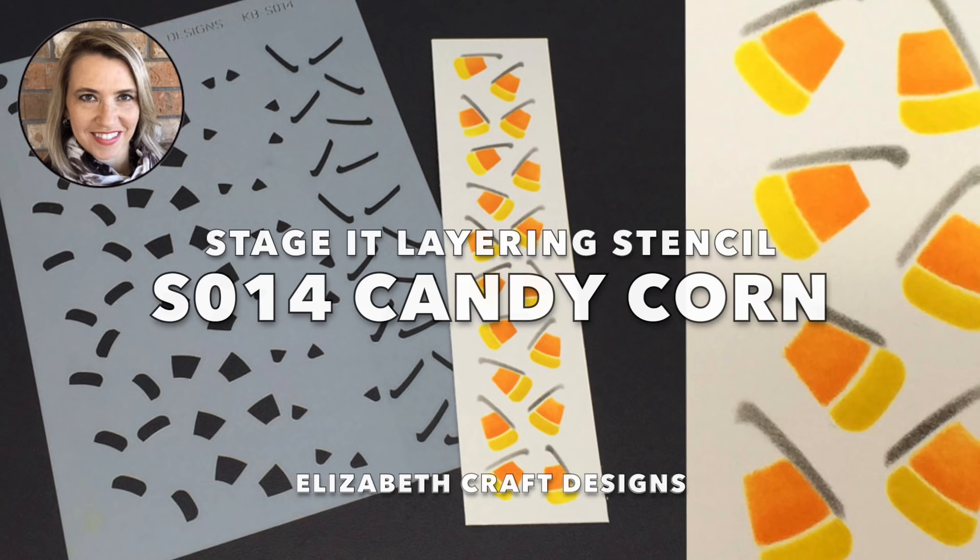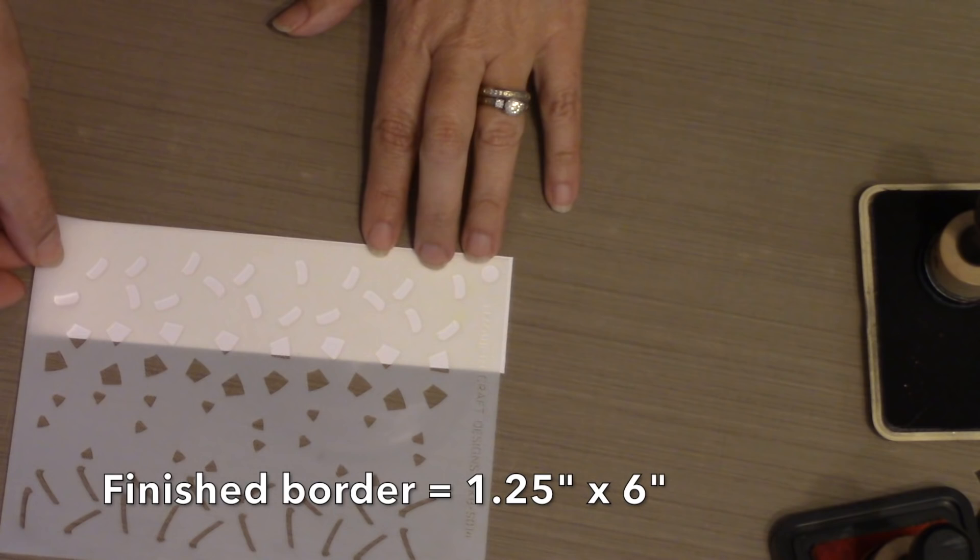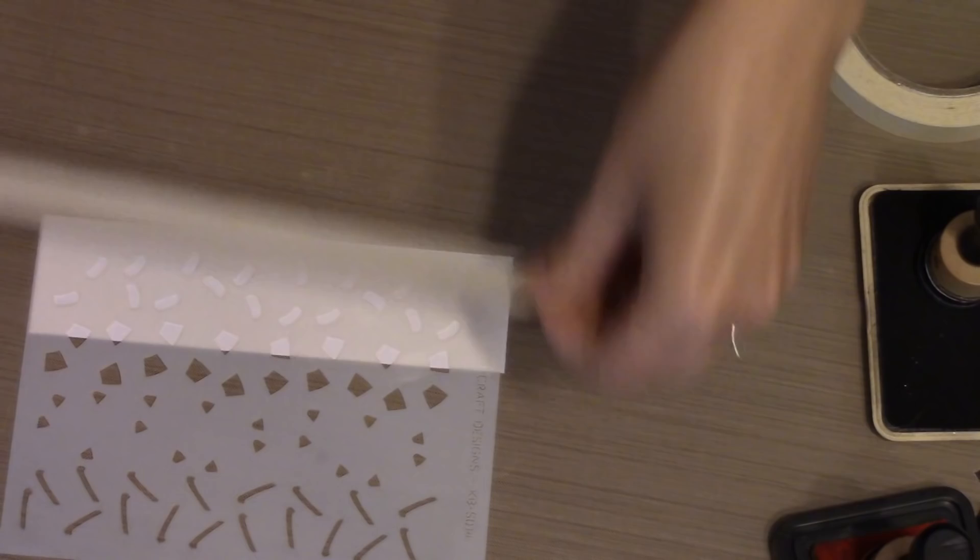The stencil is laid out in four vertical columns. When you combine those together, you will get a finished border of about an inch and a quarter by six inches. And if you actually want to make a whole background, just repeat the process as many times as you need to get a whole background.